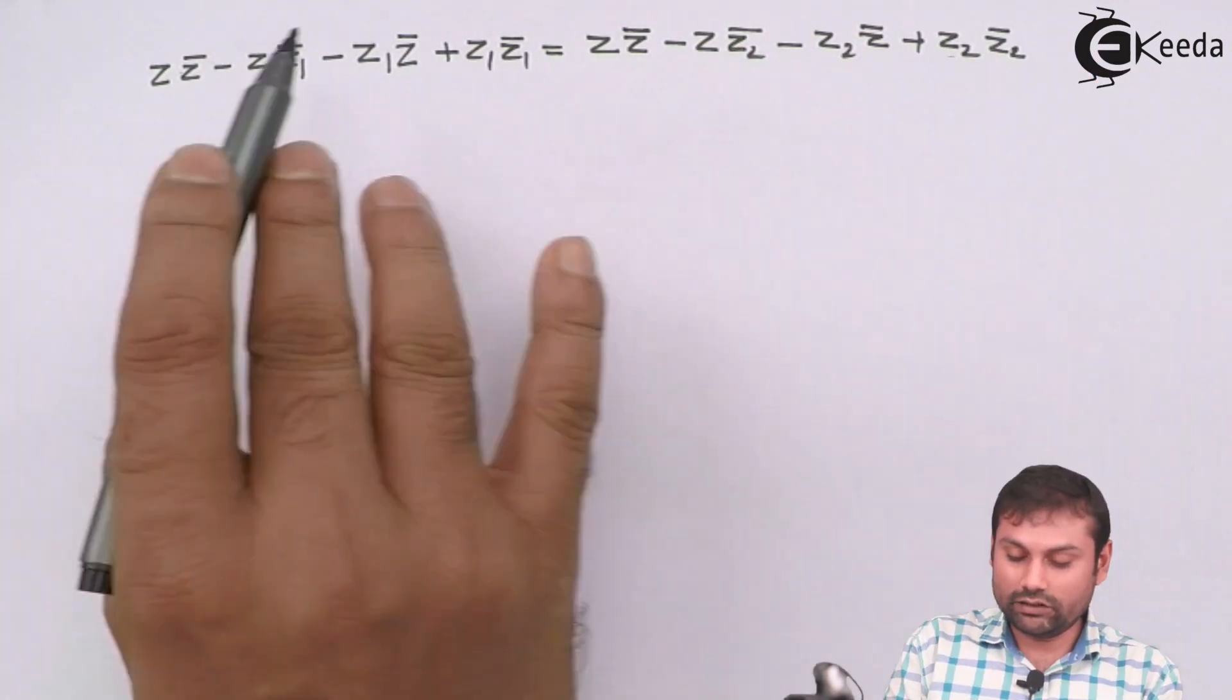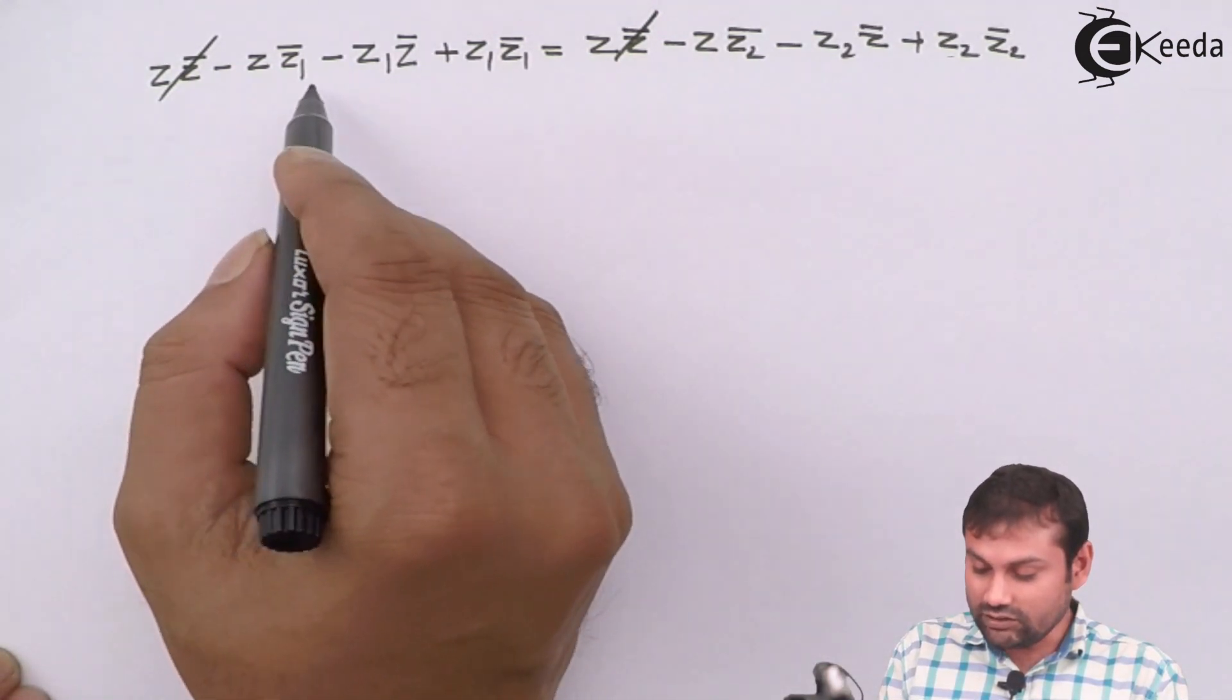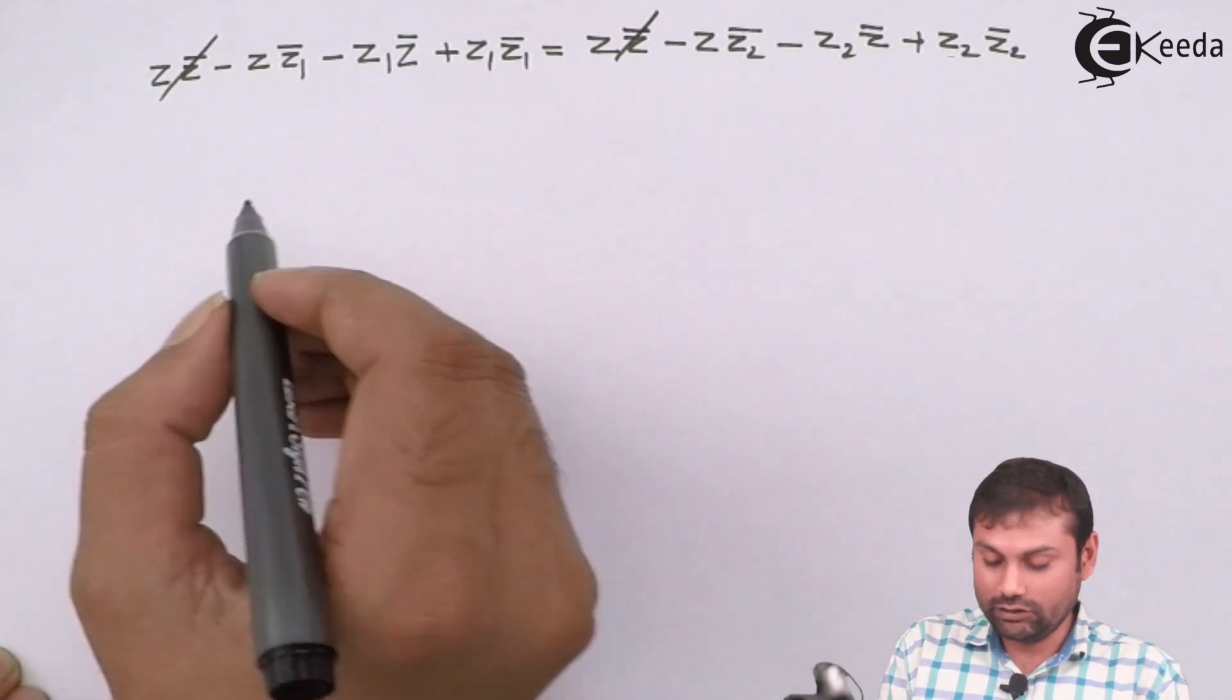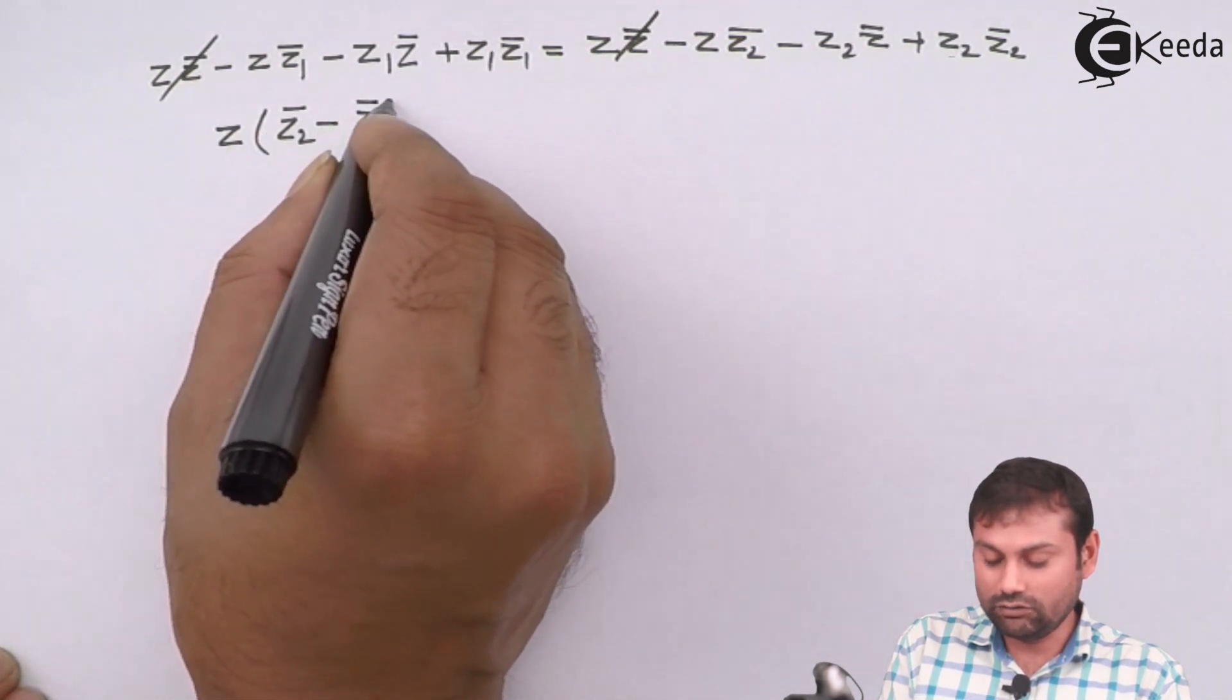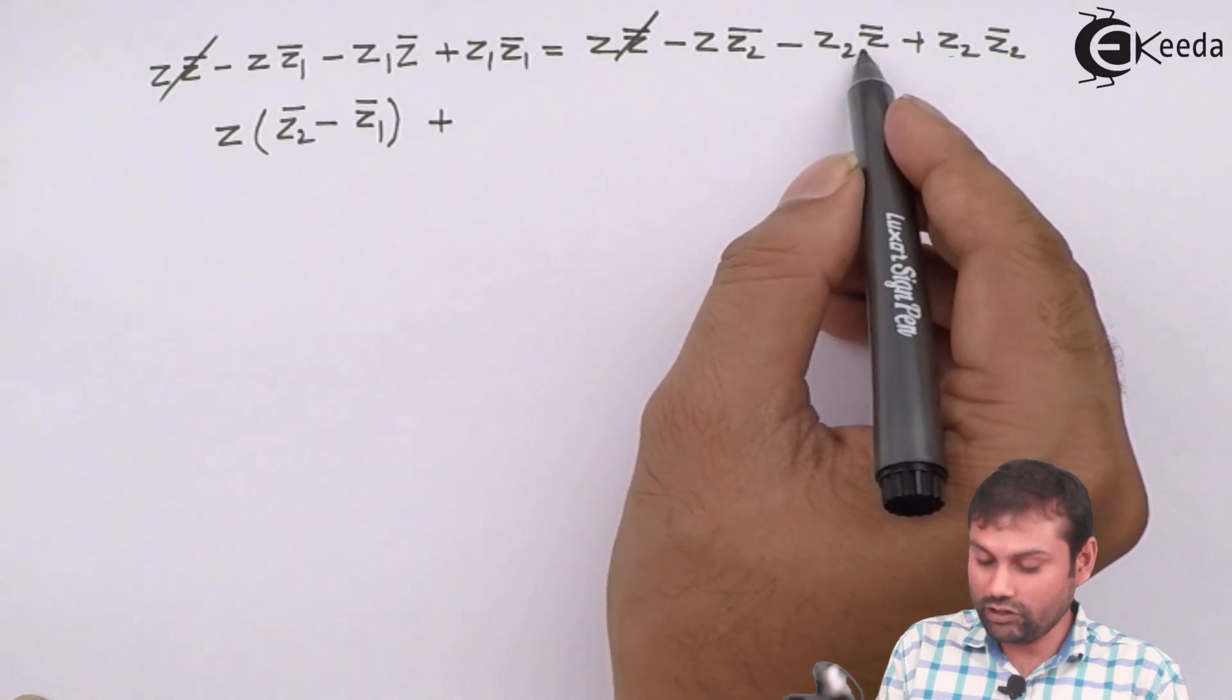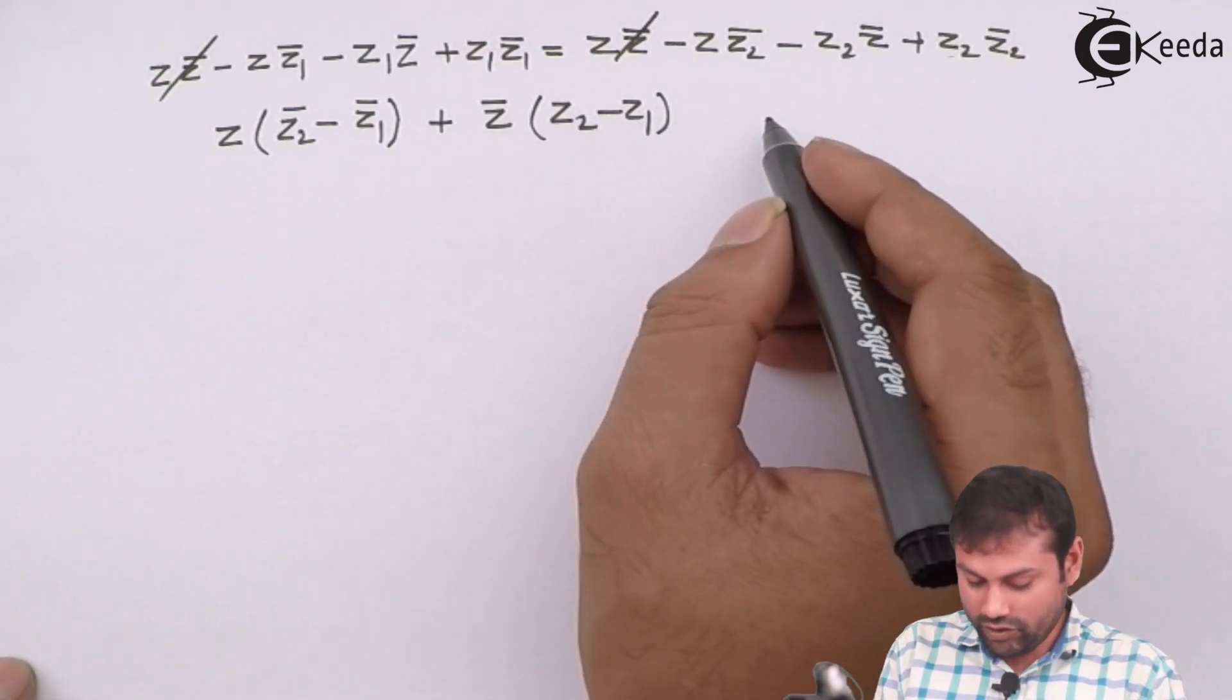Now we will put all the terms together. So here Z Z bar and Z Z bar get cancelled. So here Z Z2 bar will get cancelled and here Z Z1 bar. If you take Z bar common then you get Z bar times Z2 minus Z1.